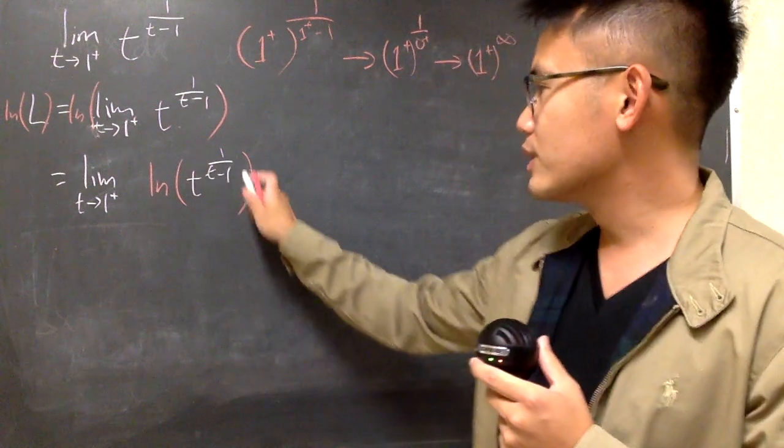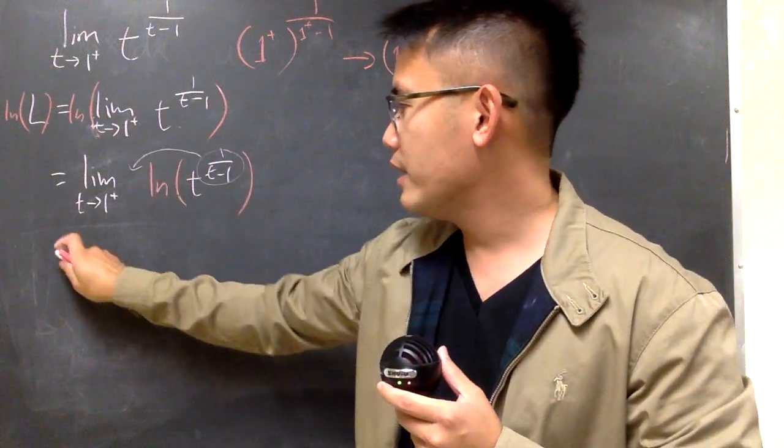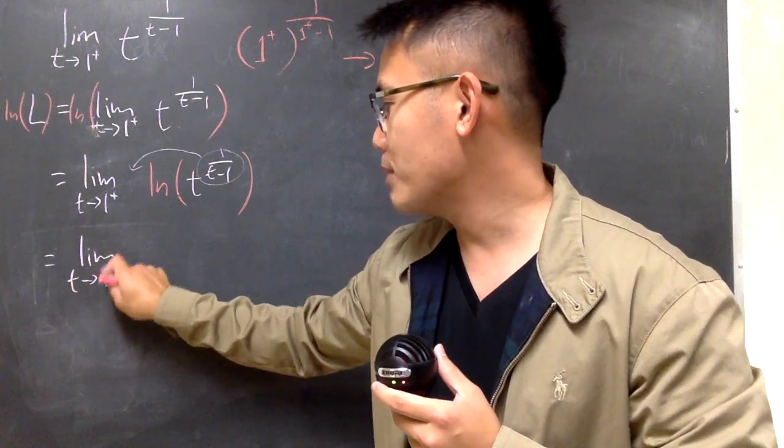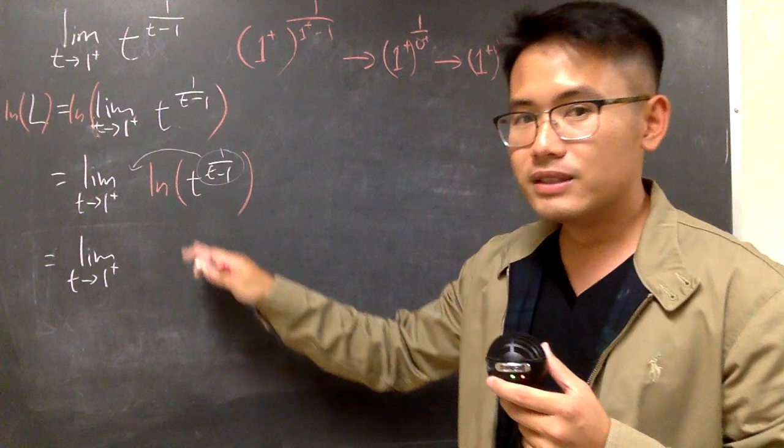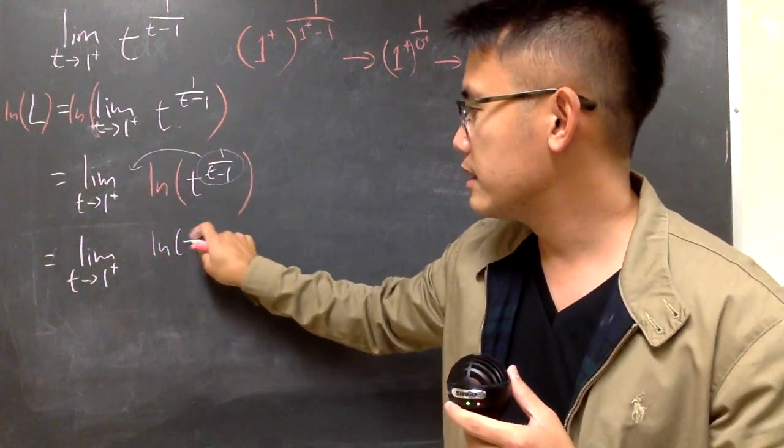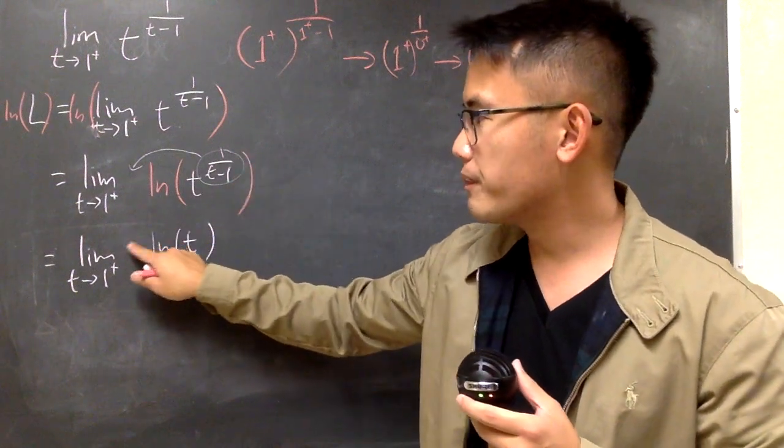And of course, we can take this power to the front, and we have the limit as t goes to 1 plus. So when I take this to the front, here we will have ln of t, and if I put 1 over t minus 1, the t minus 1 is the denominator.